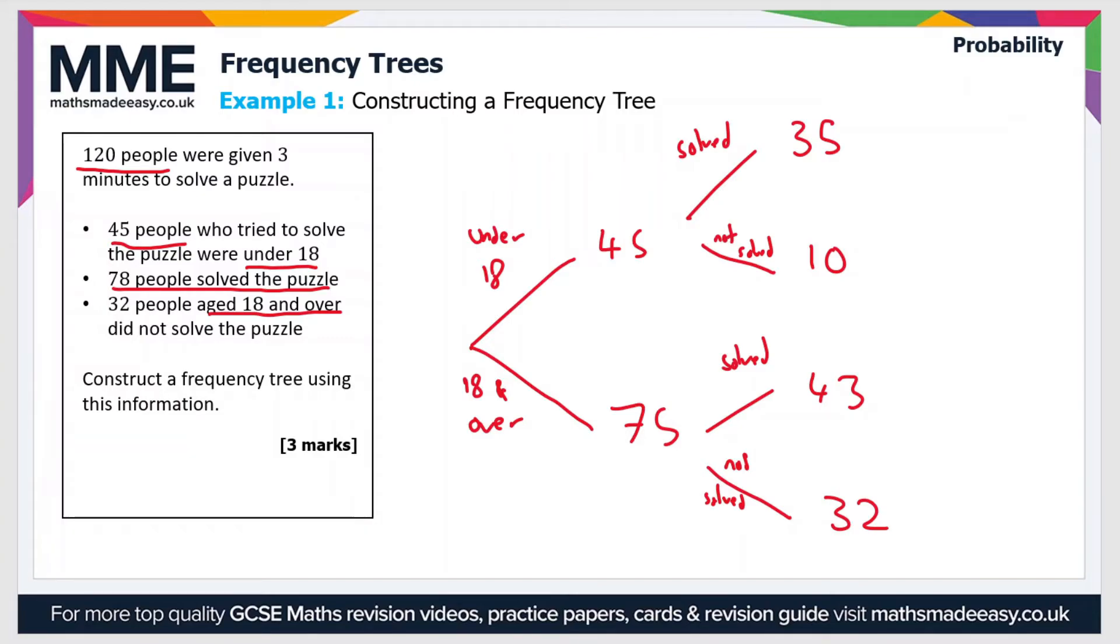So there's just a couple of things to point out with this diagram. The first is that I didn't necessarily have to do the tree diagram in this order. The first division that I made could have been people who solved the puzzle and then people who didn't solve, and then I could have divided those two into people who are under 18 and 18 and over. So it doesn't really matter which way you do it; I just chose to do it this way.